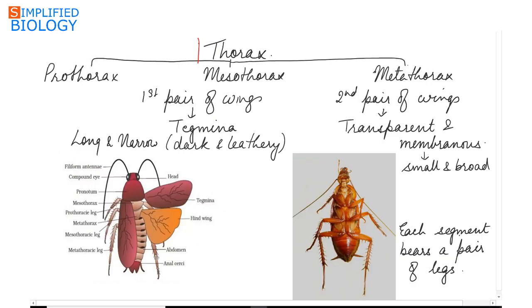Next is the thorax. The head is attached to the thorax by a flexible neck which is actually an extension of the prothorax.